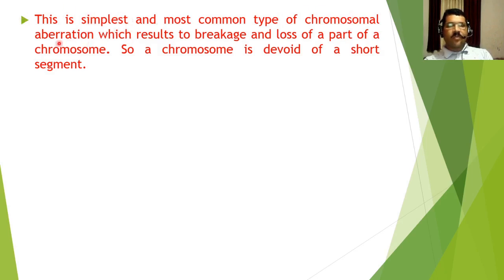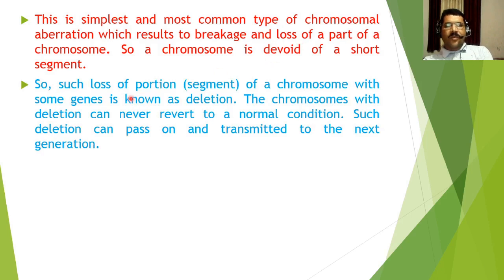Deletion is the simplest and most common type of chromosomal aberration, which results in breakage and loss of part of a chromosome — the chromosome becomes devoid of a short segment. In this process, as the name indicates, a small segment of the chromosome breaks off and gets lost, and it will never come back. Such loss of a portion or segment of a chromosome with some genes is known as deletion.